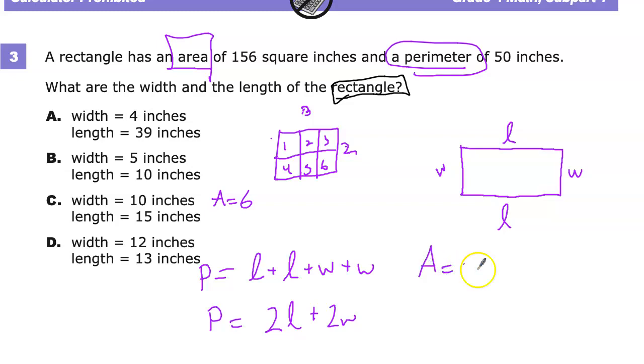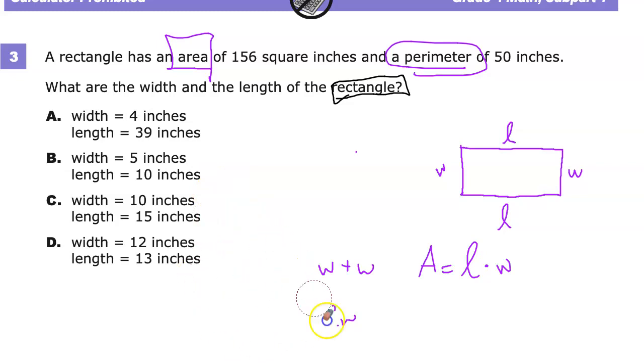So when I give area, I'm looking at length times width. Now I need to start thinking about what combinations of these things I can do to get 50 inches, for instance. And I'm just going to look at the answer choices. If they give me answer choices, I'm going to use them because I am lazy.